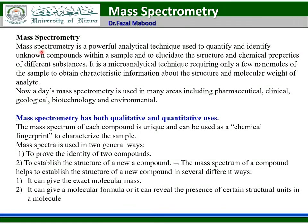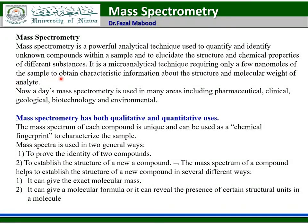Mass spectrometry is a powerful analytical technique used to quantify and identify unknown compounds within a sample and to elucidate the structure and chemical properties of different substances. It is a microanalytical technique requiring only a few nanomoles of the sample to obtain characteristic information about the structure and molecular weight of the analyte. Nowadays mass spectrometry is used in many areas including pharmaceutical, clinical, geological, biotechnological, and environmental sciences.